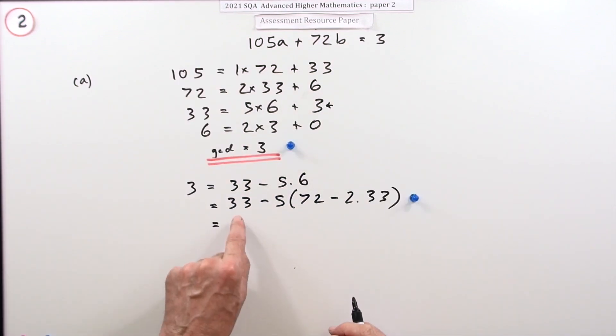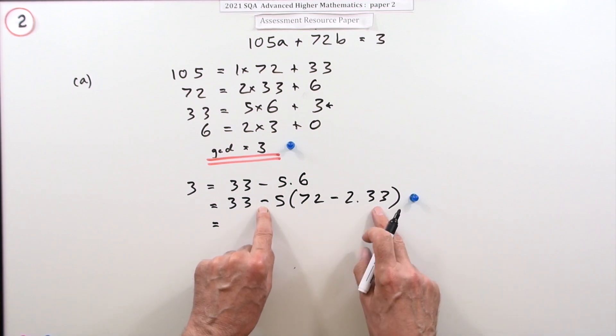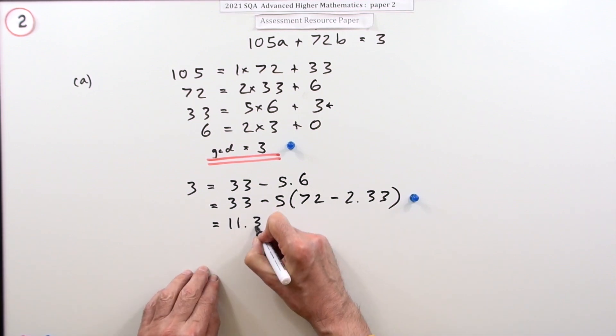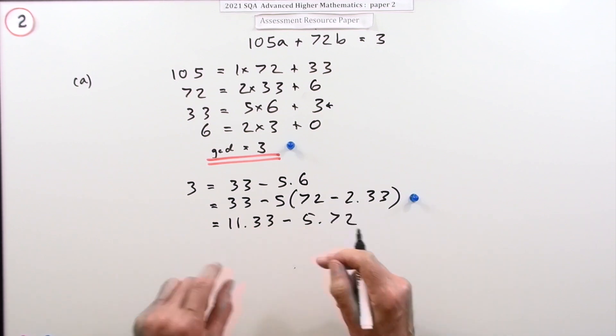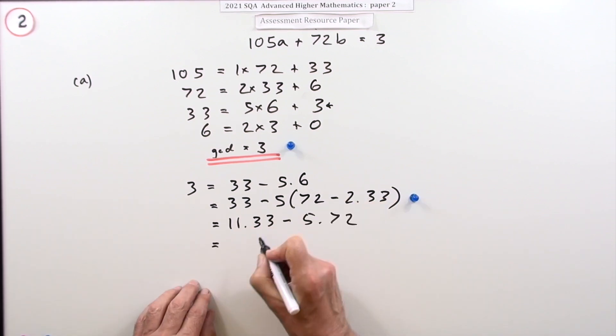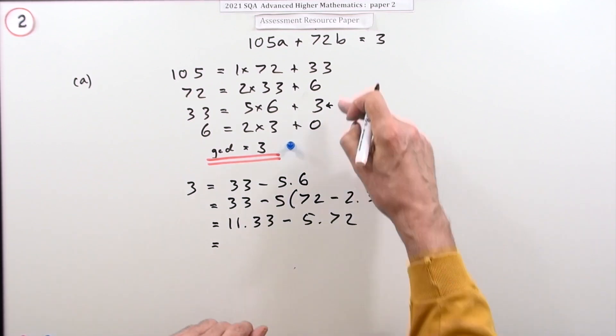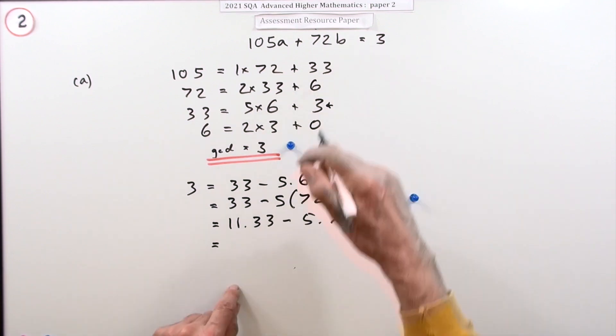Now finish it off. You've got one lot of 33 plus 10 lots of 33, so 11 lots of 33 minus five lots of 72. I'm using dots instead of crosses for multiplication to keep it cleaner. Now I can step up and replace that 33.